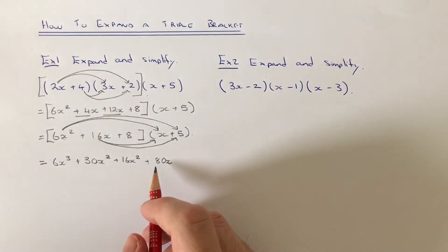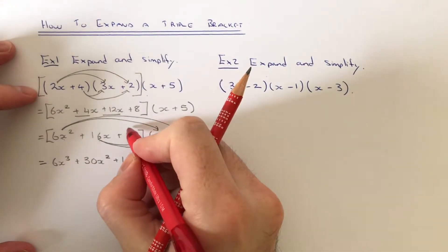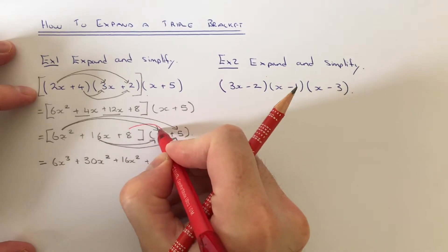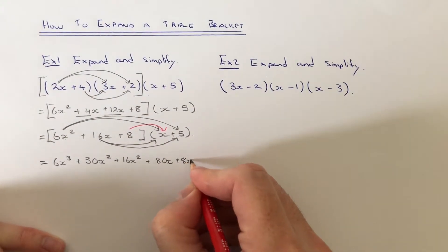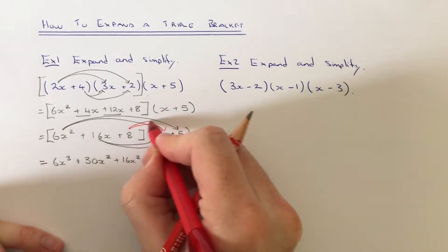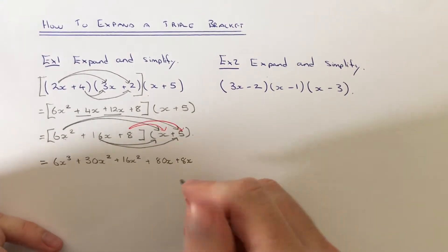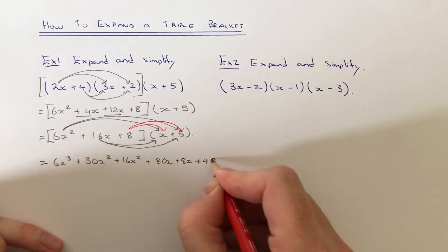We then move on to the final term in the first bracket, which is the 8. If we do 8 times the x, which is 8x, and do 8 times 5, which is 40.